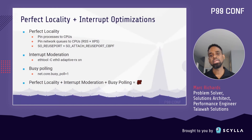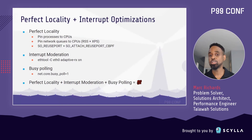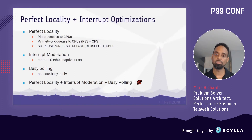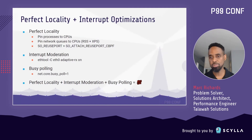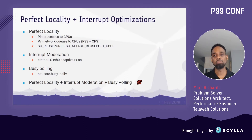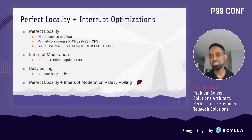On the incoming side, we use receive-side scaling to ensure that if a request comes in on queue zero, then all IRQ processing for that request would be handled by CPU zero, and so on. And then for the outgoing data, we use transmit packet steering, which essentially does the same thing in reverse.